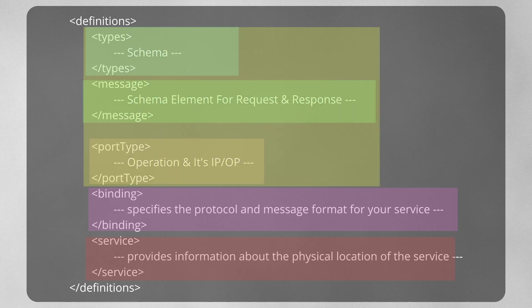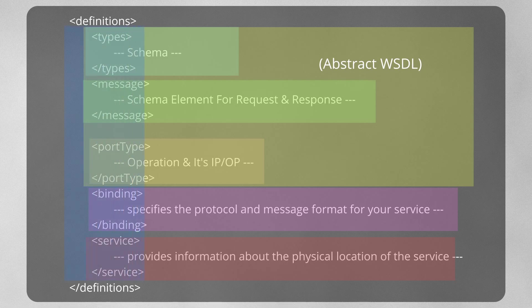Types, message, and port type collectively create an abstract WSDL, and it can be developed using JDeveloper. Once you deploy this service to a server, the WSDL adds binding and service location and becomes a concrete WSDL. I'll show you this as well in today's demo. So now let's do the demo of various ways to create a WSDL from scratch using JDeveloper.